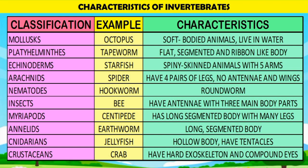Spiders are arachnids — they have four pairs of legs, and they don't have antennae and wings. Hookworms are nematodes — they are roundworms. Insects have antennae with three main body parts. Example: Bee. Myriapods have a long, segmented body with many legs. Example: Centipede. Earthworms are annelids — they have a long, segmented body. Jellyfish are cnidarians — they have a hollow body and tentacles. Crustaceans have a hard exoskeleton and compound eyes. Example: Crab.